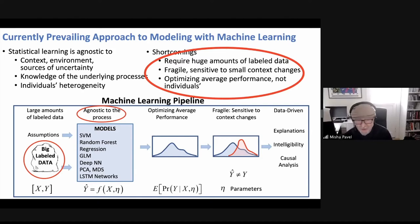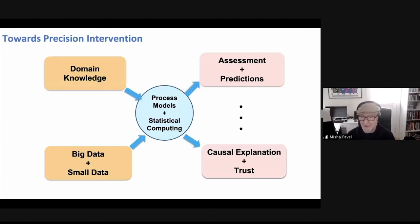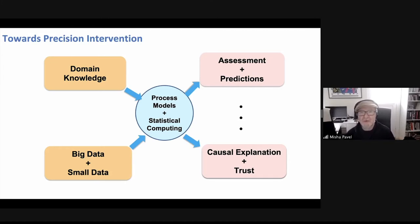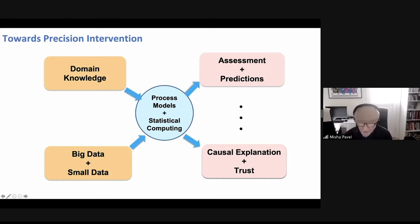We have a problem in healthcare, military, or flight design when you have to make a decision about individuals — how well do you know how well that individual was served by a model not based on the process or any knowledge about what's going on? Using mechanistic or process models, we can develop better assessments and predictions. I'm going to go through some simple examples of how we've been using domain knowledge to develop models that combine data — even small data for individuals — to find explanations.